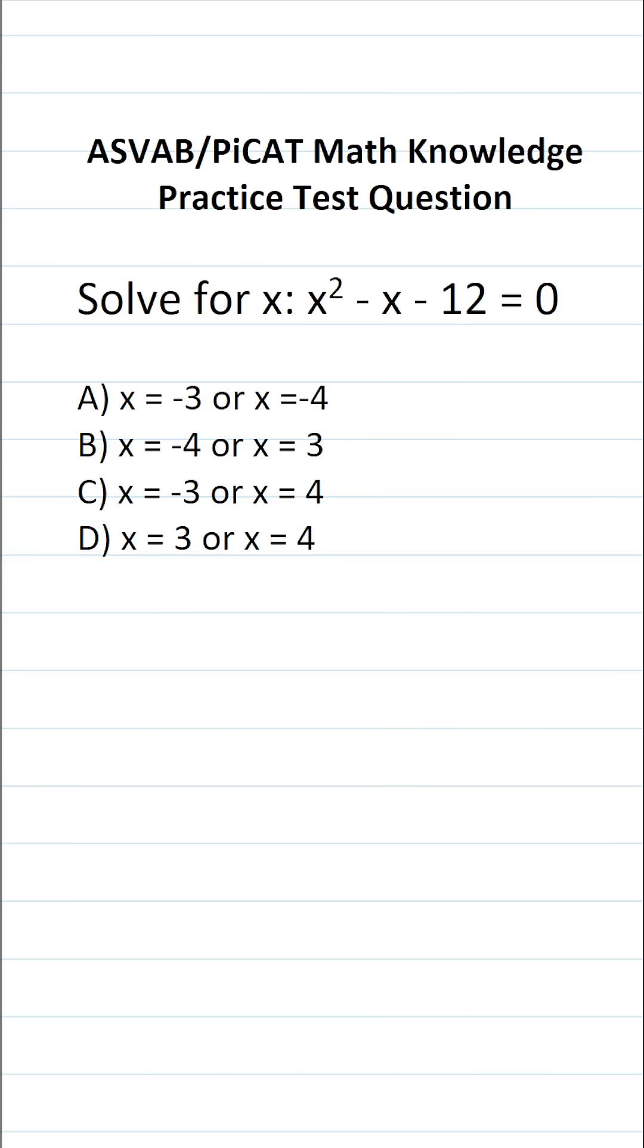This math knowledge practice test question for the ASVAB and PICAT says: Solve for x, we have the equation x squared minus x minus 12 equals 0.